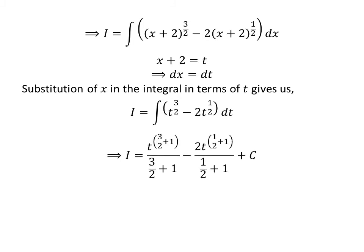We know the integral of t raised to the power of n is equal to t raised to the power of n plus 1 upon n plus 1. So i is equal to t raised to the power of 3/2 plus 1 upon 3/2 plus 1, minus 2 times t raised to the power of 1/2 plus 1 upon 1/2 plus 1, plus capital C. Capital C is the arbitrary constant of indefinite integral — never forget to add this constant.